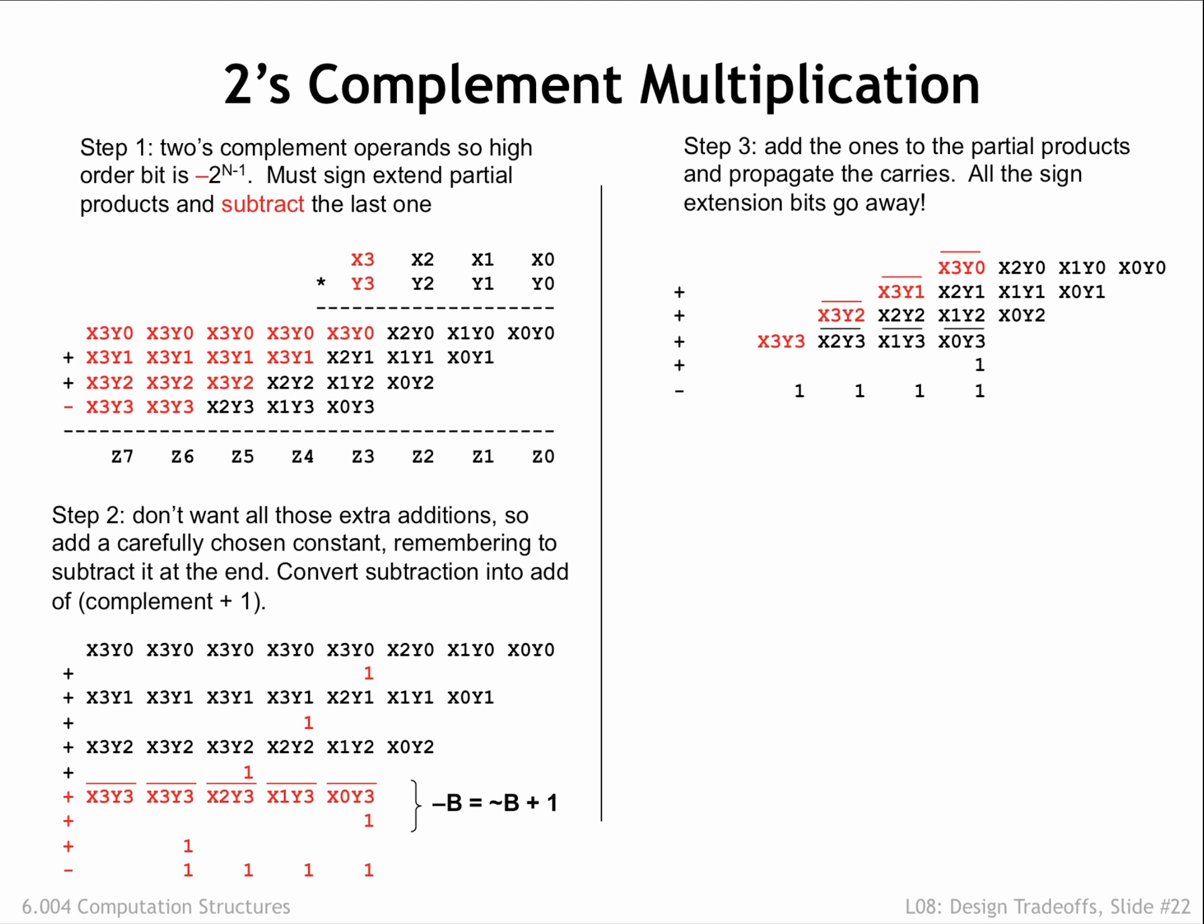When that's added to the first sign extension bit, which is itself a 1, we get 0 with another carryout, and so on with all the sign extension bits eventually getting flipped to 0 as the carry ripples to the end. Again, the net effect of adding a 1 in that position is to simply complement x3y0.